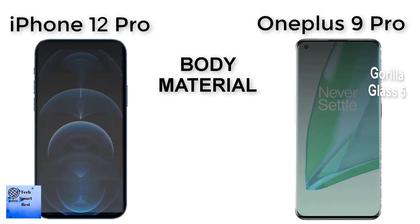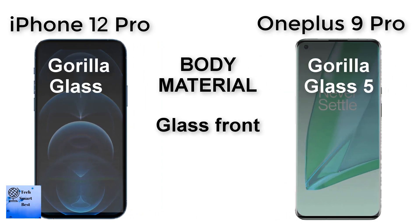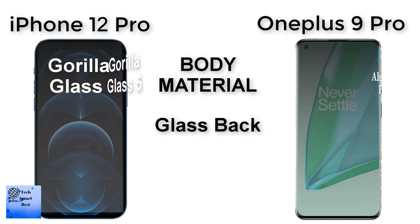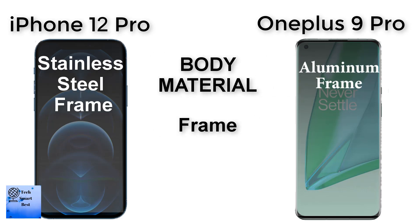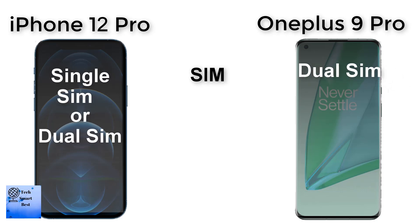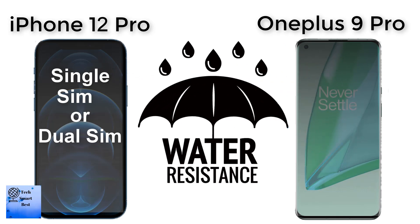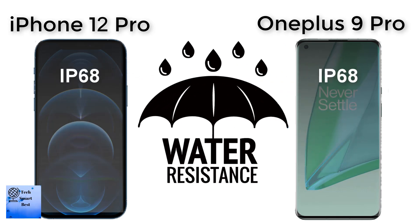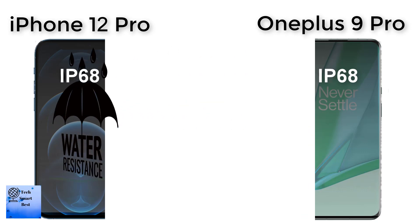The body material of the OnePlus 9 Pro: glass front is made from Gorilla Glass 5, glass back is also made from Gorilla Glass 5, and aluminum frame. The body material of the Apple iPhone 12 Pro: glass front is made from Gorilla Glass, glass back is also made from Gorilla Glass, and stainless steel frame. The SIM of the OnePlus 9 Pro is dual SIM, and the SIM of the Apple iPhone 12 Pro is single SIM or dual SIM. Both smartphones are IP68 dust and water resistant.